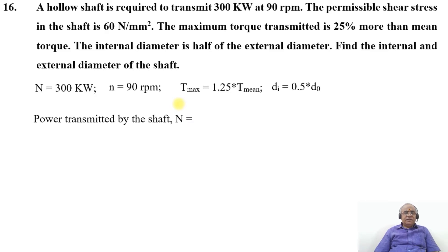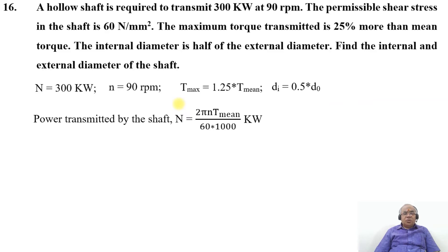Since the power is given, the power transmitted by the shaft — capital N — equals 2π × n × T_mean divided by 60, in kW. Substituting the values: 300 = (2π × 90 × T_mean) / (60 × 1000).